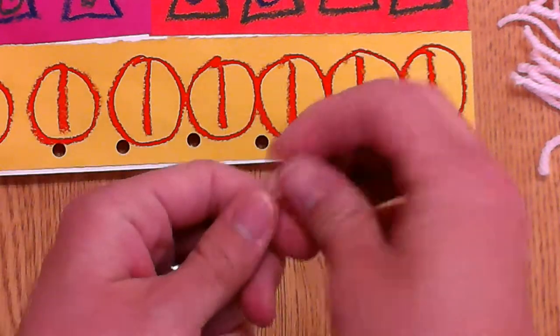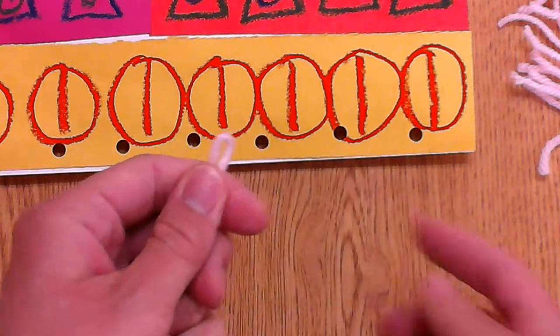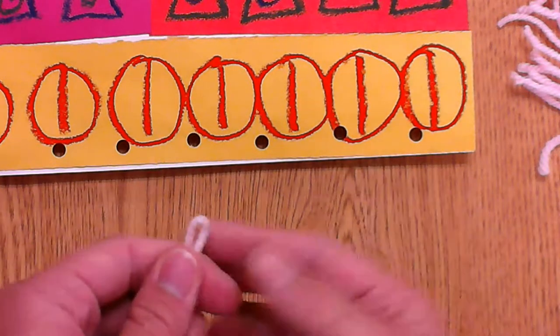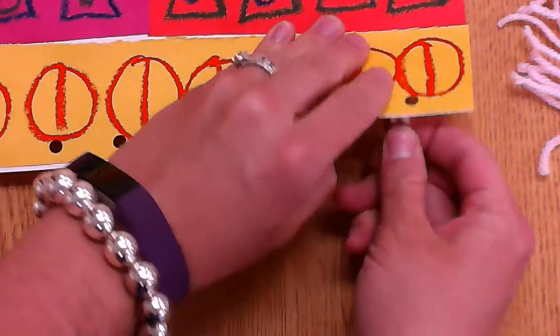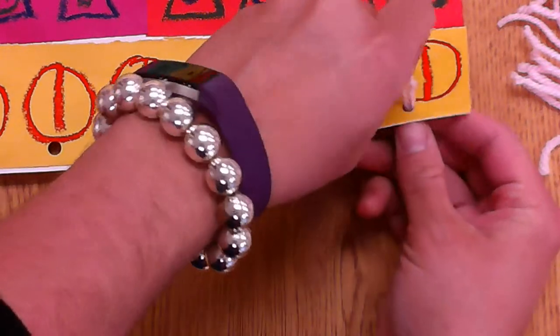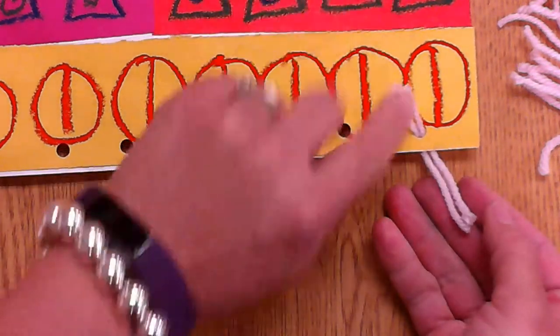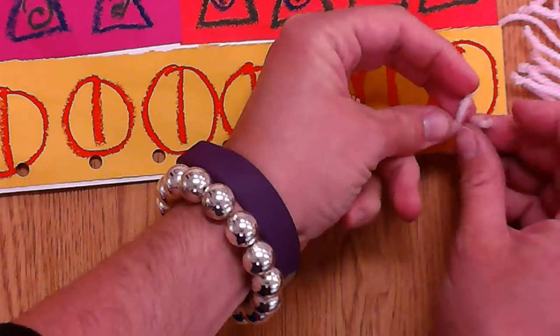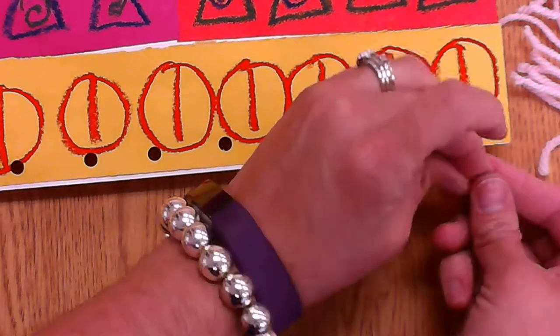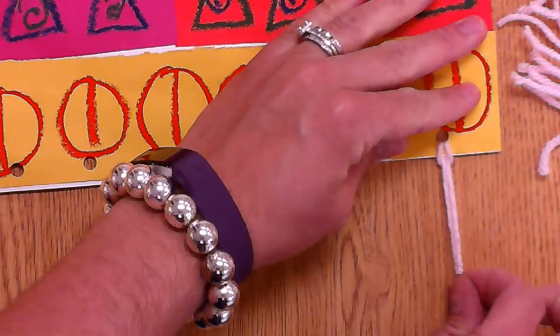I'm going to pinch the loop like that. And I'm going to put the loop from behind through my hole and then put the little tails through the loop. So here's my tails. There's my loop. I'm going to open up the loop and put the tails through the loop and gently, gently pull.